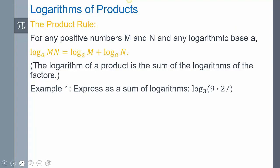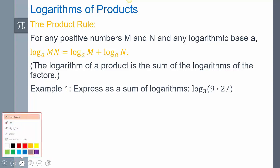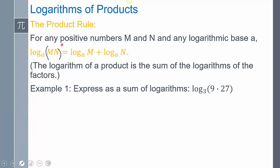The first is the product rule. This product rule says that if you're ever multiplying two values inside of a logarithm, you can break it into two different logs — with each of its factors inside of it, M and N. You're going to see why this is important in a second, because it's going to allow us to simplify things.